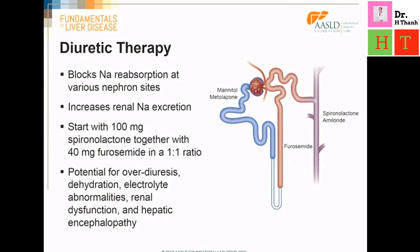Diuretic therapy is usually required to increase renal sodium excretion. There are different classes of diuretics that block sodium reabsorption at various nephron sites. It is customary to use a distal diuretic such as spironolactone or amiloride paired with a loop diuretic such as furosemide to achieve a smoother diuresis. The usual starting dose is 100 mg of spironolactone or 5 mg of amiloride together with 40 mg of furosemide in a 1 to 1 ratio.